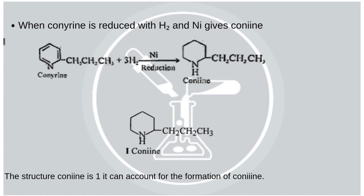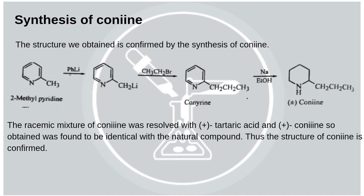Further confirmation of the structure is done by the synthesis of conine. The starting material for this synthesis is 2-methylpyridine, which was converted to the corresponding alkyl-lithium compound using phenyl lithium. Nucleophilic substitution using bromoethane was then followed by reduction using sodium and ethanol to obtain conine. This confirms the structure of conine.